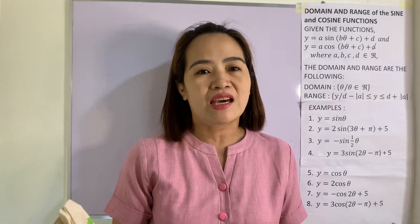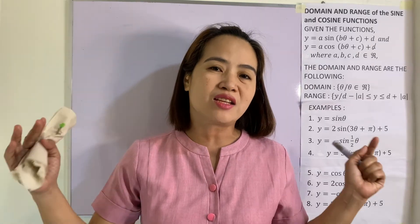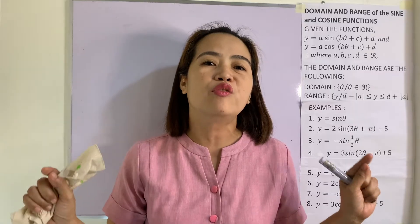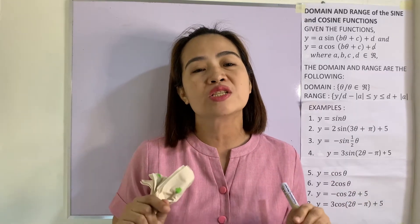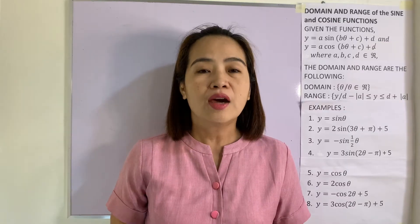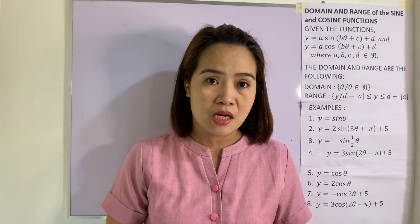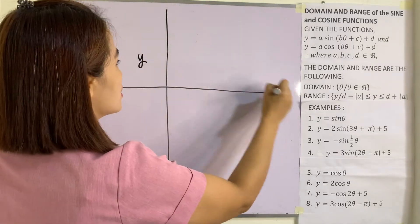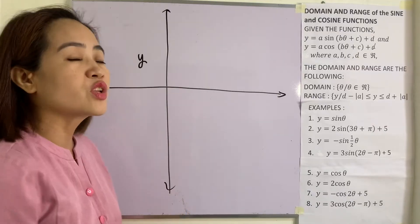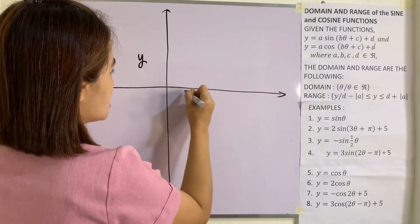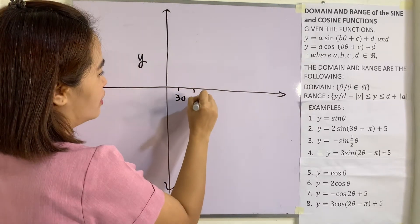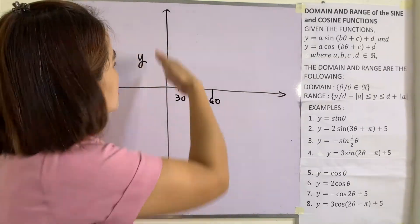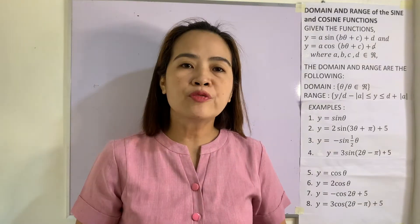We know what domain is and we know what range is. Domain is the set of all x's and range is the set of all y's. But in circular functions, our set of x's will be the angles — the theta. If we graph it, the y-axis represents the range and the x-axis serves as your angle axis, with values like 30, 45, 60 and so on. So the x-axis becomes your domain and the y-axis is your range.